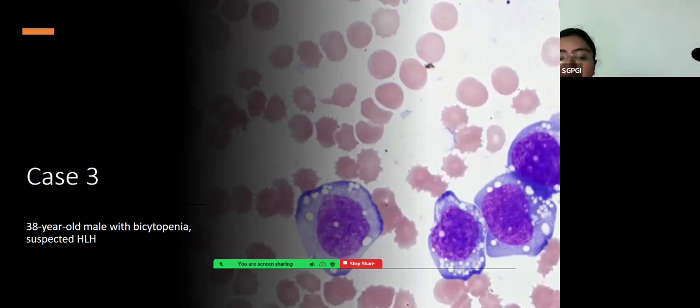Case 3 was a 38-year-old male with bicytopenia suspected HLH. You have cells on the right. What do these cells look like? These cells are large cells, very large cells, abnormal cells. They have vacuolation and they are sort of sticking together as well. That is the morphology of these cells.